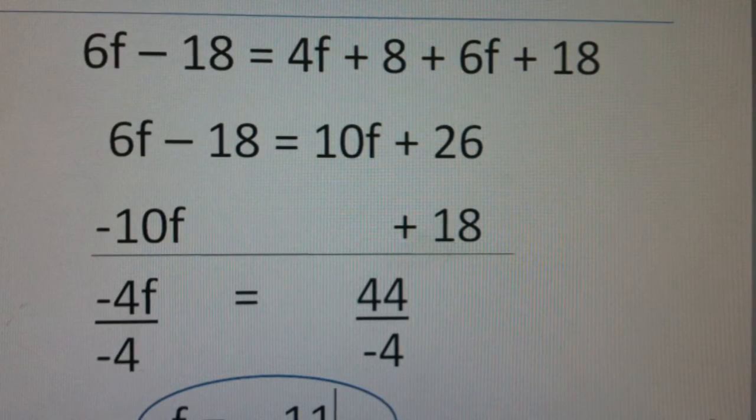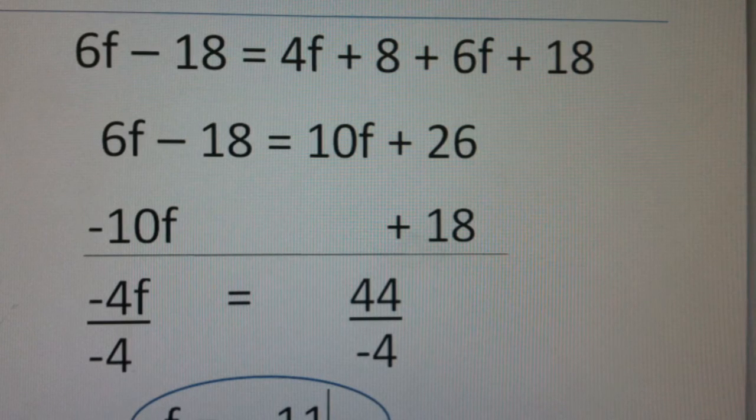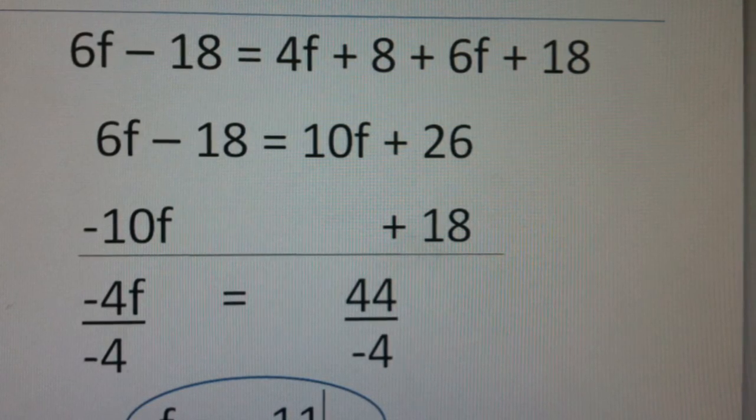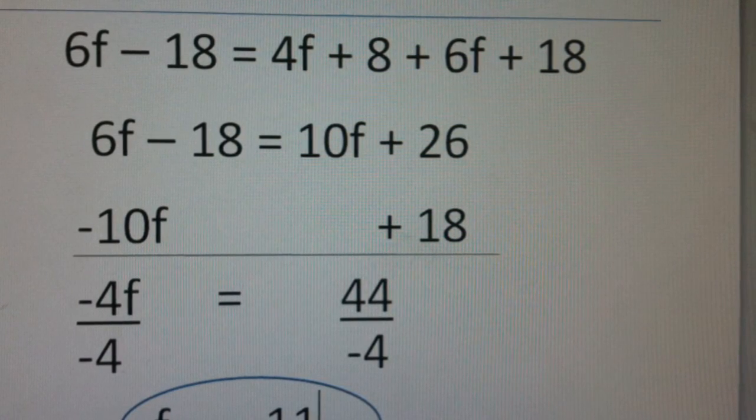So first distribute, then combine like terms. Move all your variables to one side of the equal sign, your numbers to the other side. When you move it, it becomes the opposite. Your answer is negative 11.